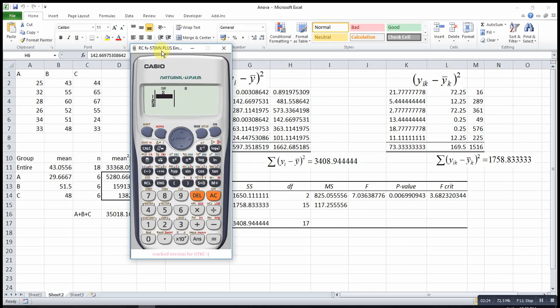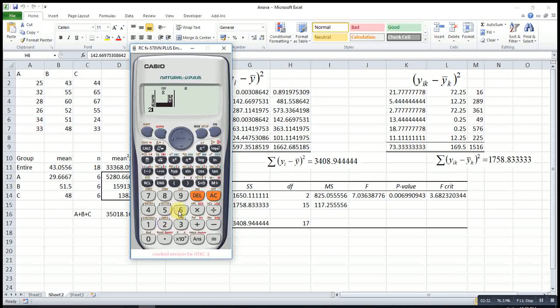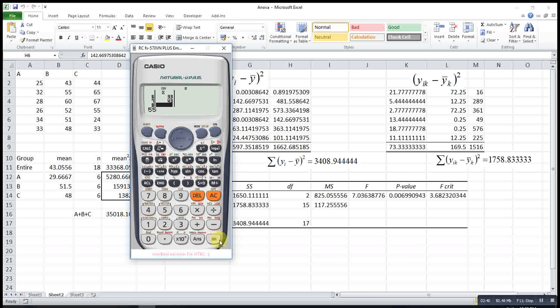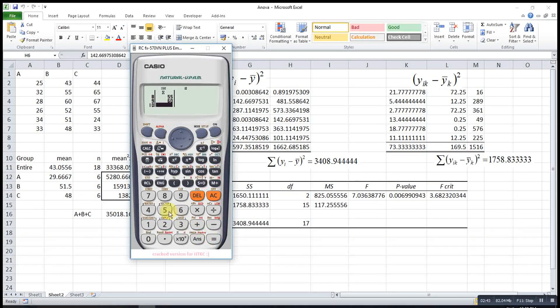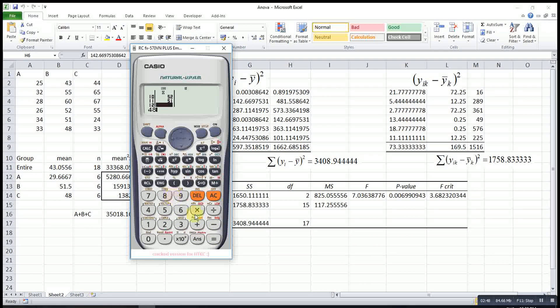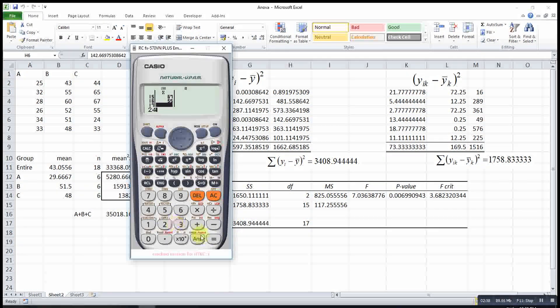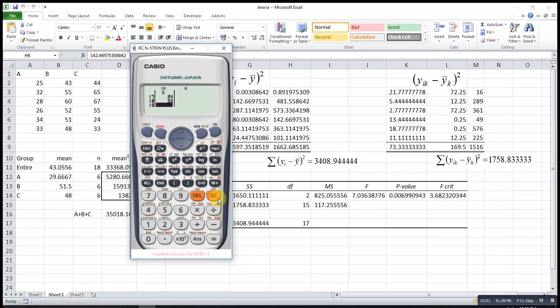Then enter all these values: 25, 32, 28, 26, 34, 33, 43, 55, 60, 52, 51, 48, then 44, 65, 67, 55, 25, 24, and last one 33. Then escape.